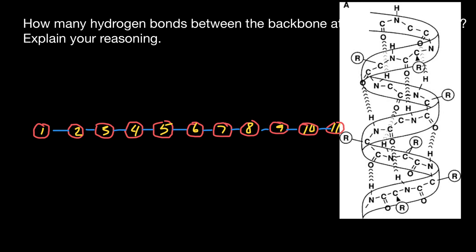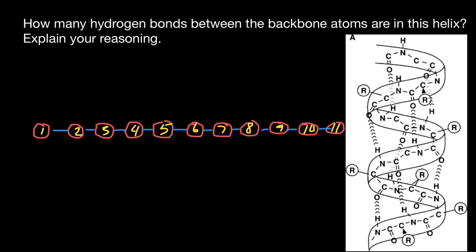Now take a look at this picture. This is an alpha helix made of amino acids. At the N-terminus, the carboxylic groups have no other amino groups to make hydrogen bonds with — they only have single hydrogen bonds, simply because this is the beginning of the alpha helix.